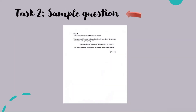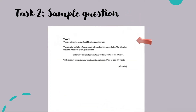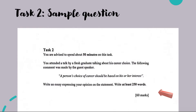Let's now look at a sample question for a discursive essay. By the way, this is the same question as found in my previous video — I had to break the previous video into two parts because otherwise it was going to be more than 20 minutes long. Task 2: You are advised to spend about 50 minutes on this task. You attended a talk by a fresh graduate talking about his career choice. The following comment was made by the guest speaker: 'A person's choice of career should be based on his or her interests.' Write an essay expressing your opinion on the statement. Write at least 250 words. 60 marks.